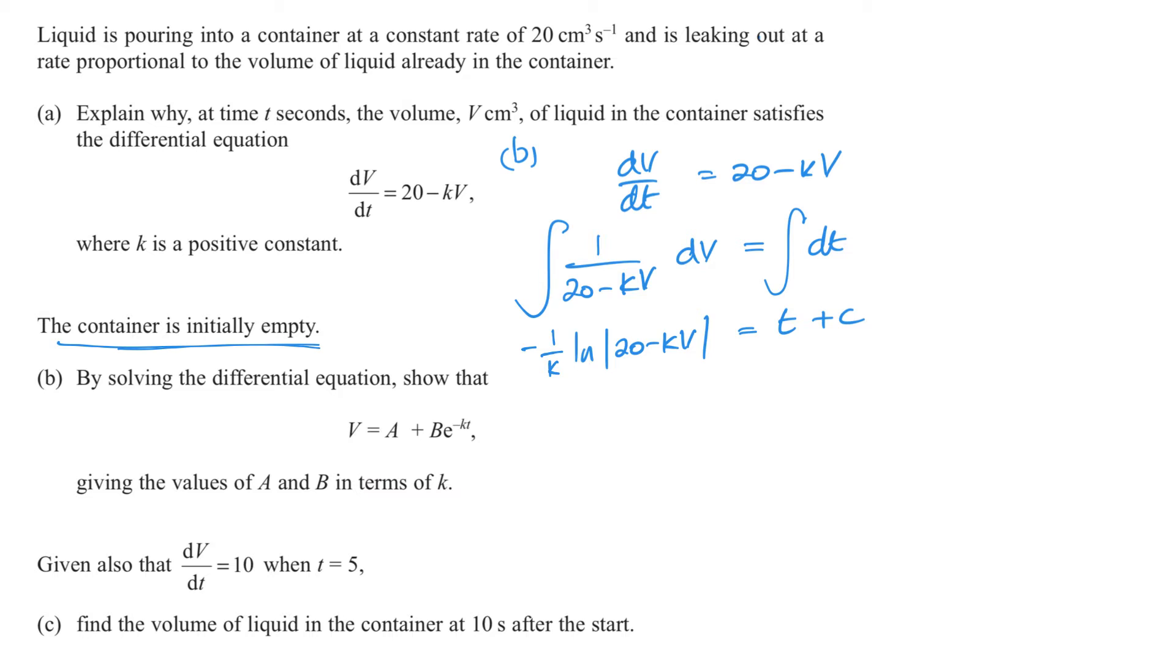It tells me that the container is initially empty. That means at t equals 0, V would be 0. So, we've got minus 1 over k ln 20 minus 0 equals 0 plus c. So, c is minus 1 over k ln 20. My equation is, at the moment, negative 1 over k ln 20 minus kV equals t minus 1 over k ln 20.